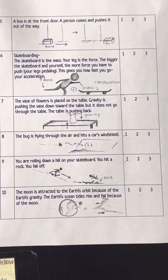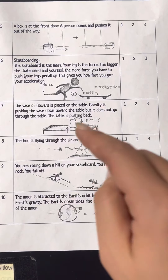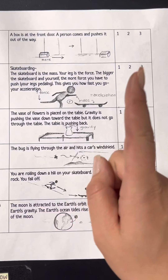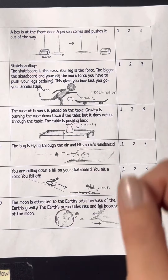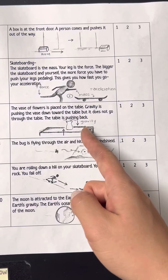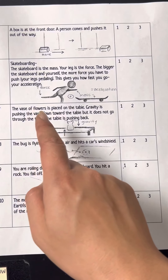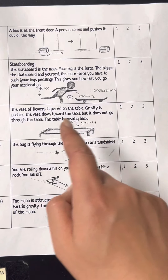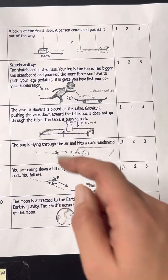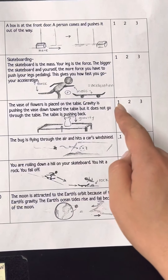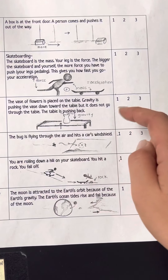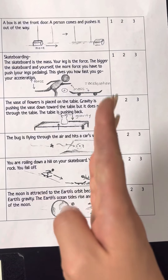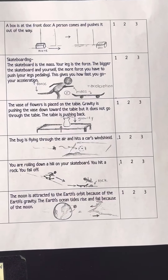Number 7: A vase of flour is placed on the table. Gravity is pushing the vase down toward the table, but it does not go through the table — the table is pushing back up on the vase. Which law is it? Is it Law 1, Law 2, or Law 3 that gravity is pushing on the table but the table is pushing back up?